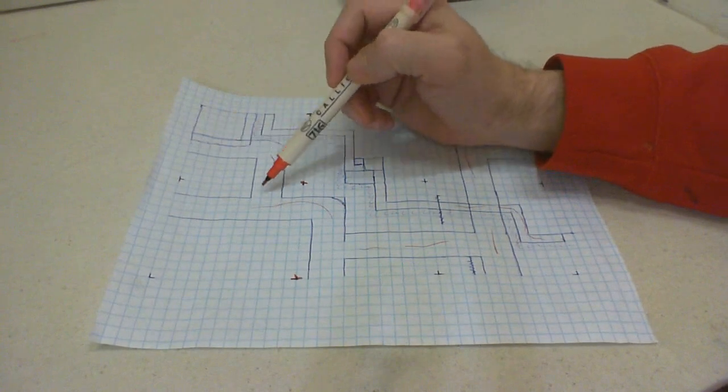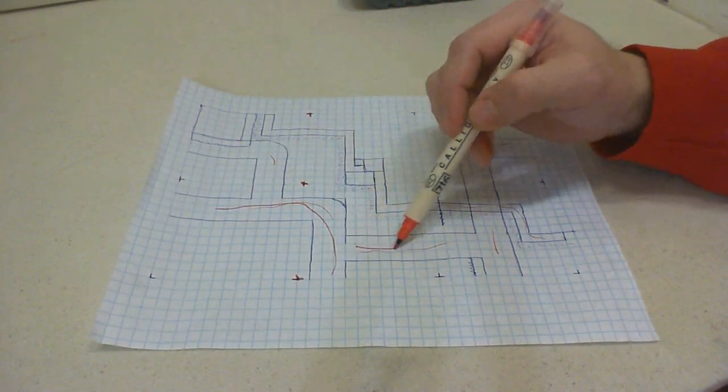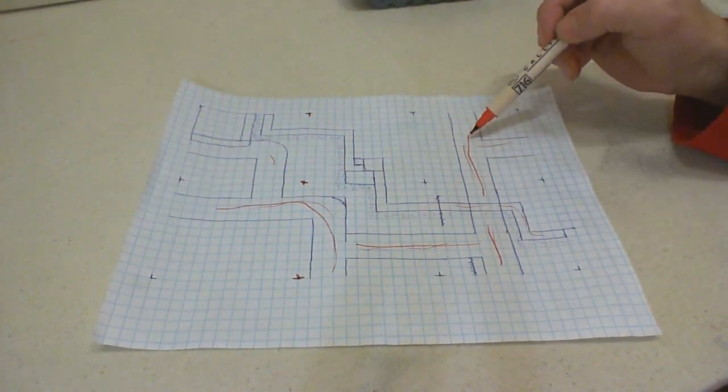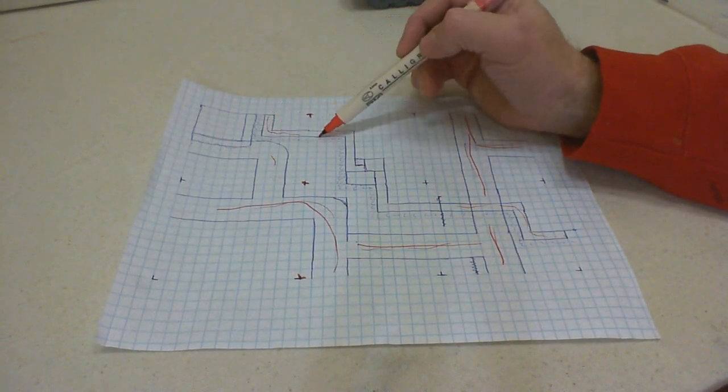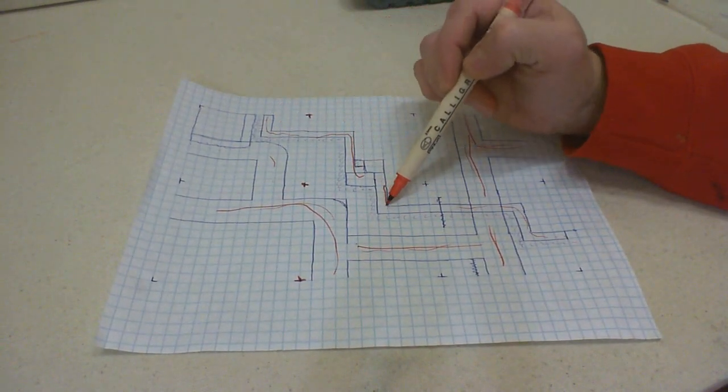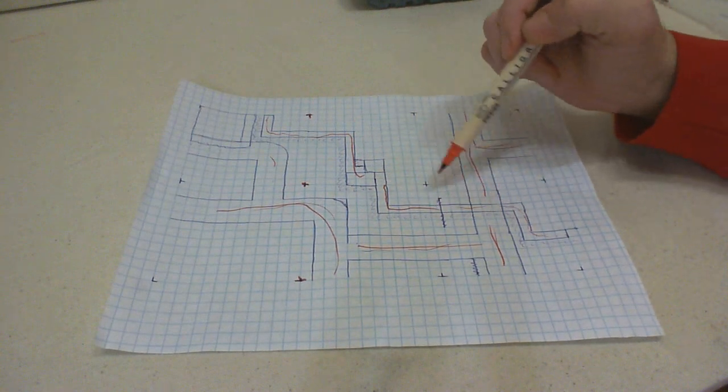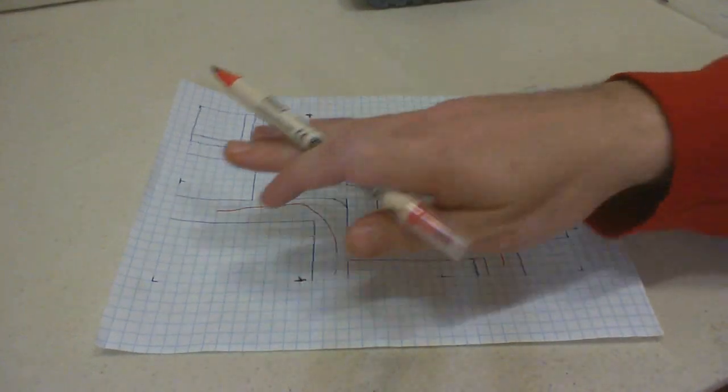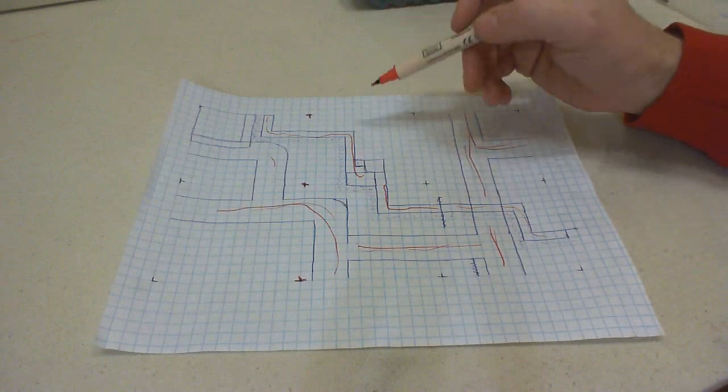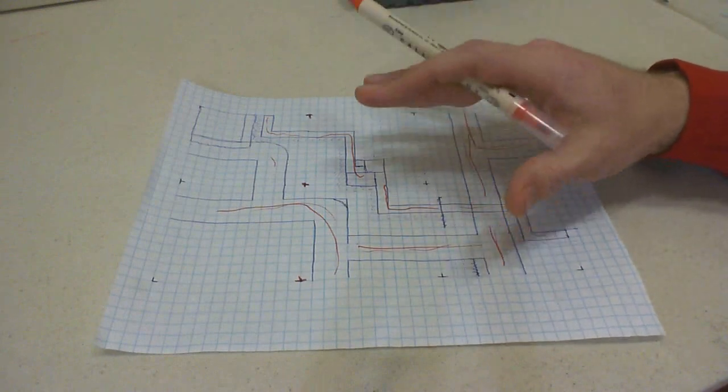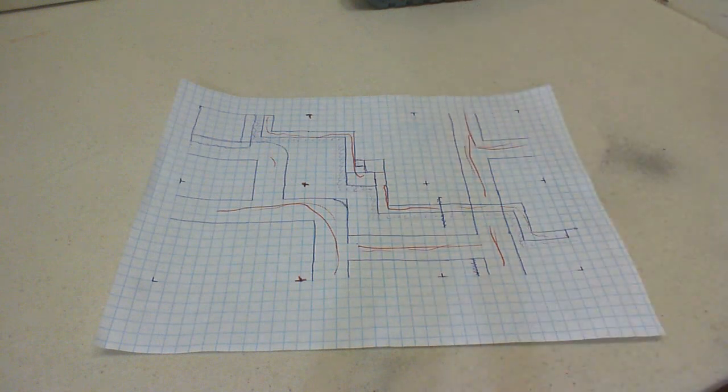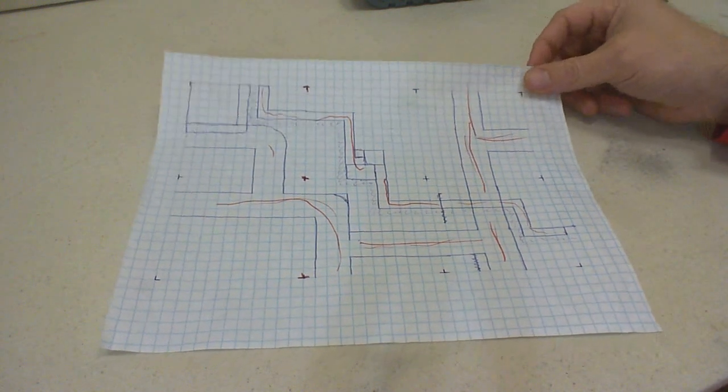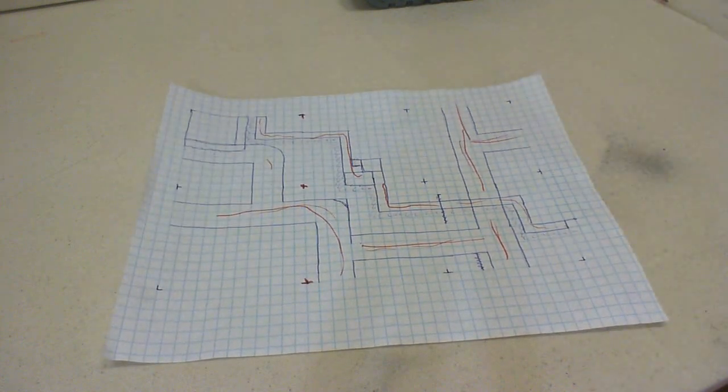So you can see here I have some roads laid out and then we have this little waterway that's going to be running kind of through the middle of the board more towards this side than this side. But again this is just my first rough outline of how I want everything to look.